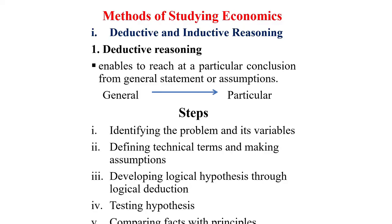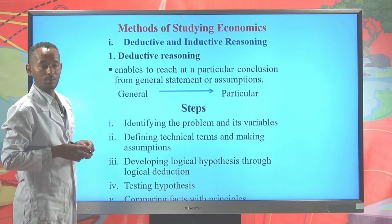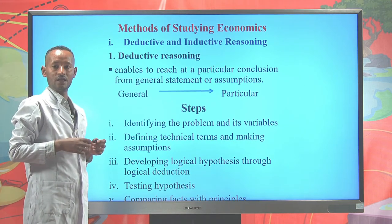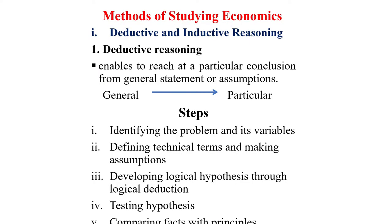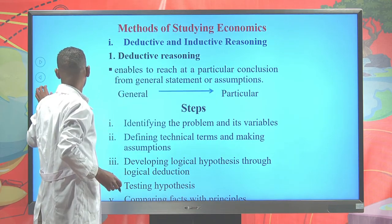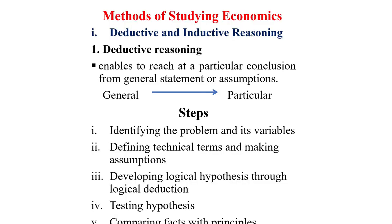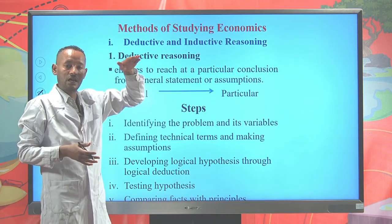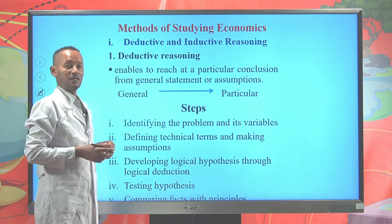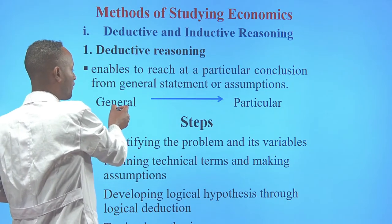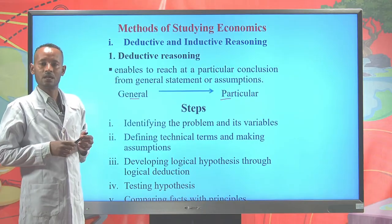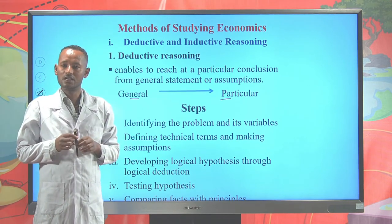From the methods of studying economics, let's see the first method called deductive and inductive reasoning. Logical reasonings are used to explain causes and effects of some factors. Deductive reasoning enables us to reach a particular or specific conclusion starting from a general statement or assumptions — that is, it moves from general to particular. Most economic tools are developed using deductive reasoning.